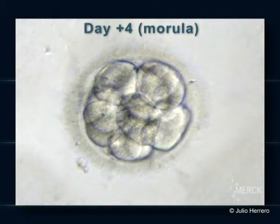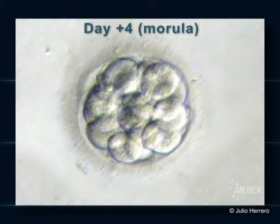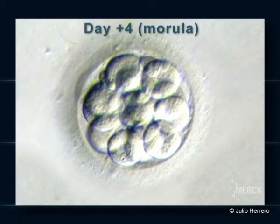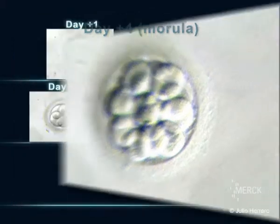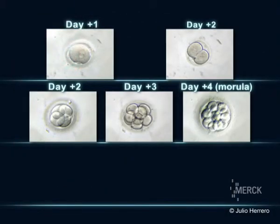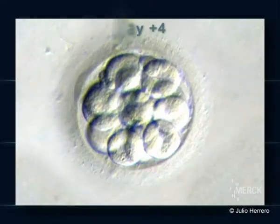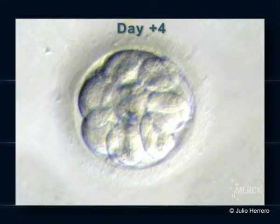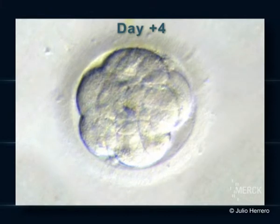On day four, the embryo divides a number of times, becoming a morula. This is when it begins to become compact.